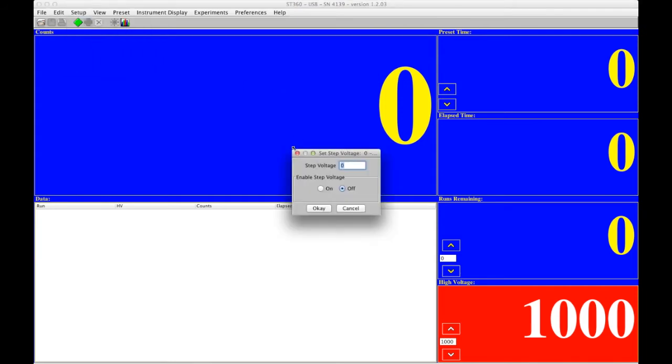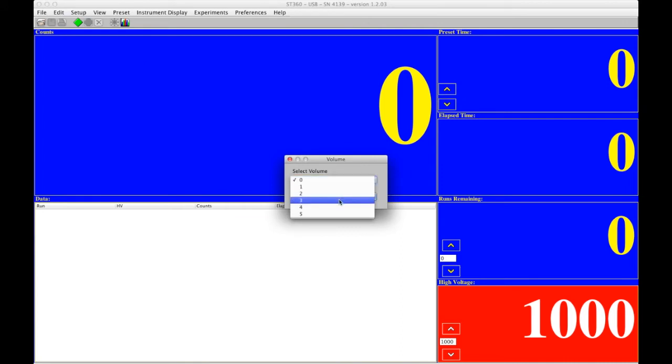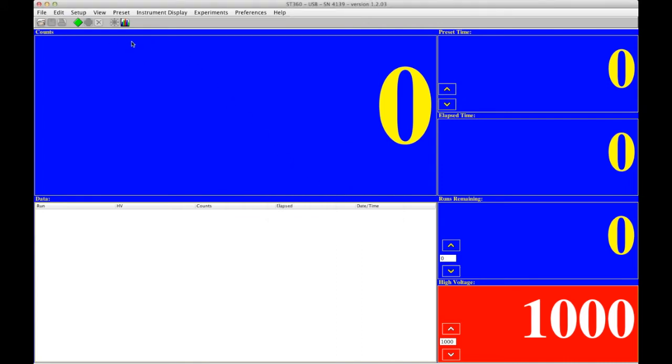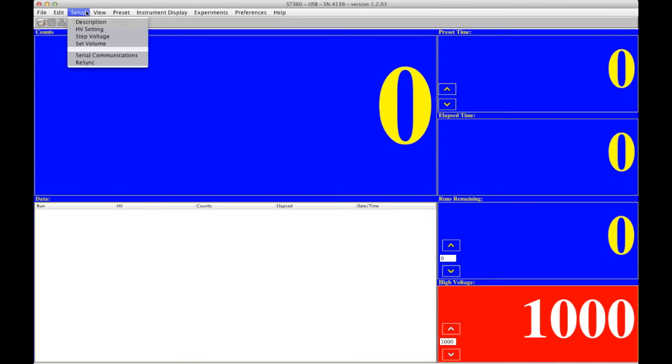Step voltage. We don't need this unless we're doing something like a plateau study. That's for advanced users. Set volume. We did that before in standalone mode. It's much easier here. The serial communications and re-sync is used to reconnect if we're using an RS-232 connection. But we are using the USB. And that's newer and doesn't usually require such things.